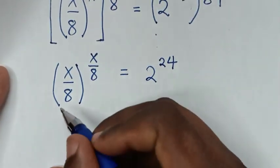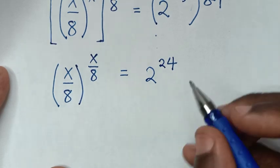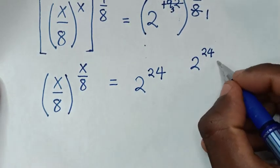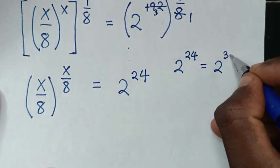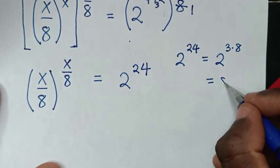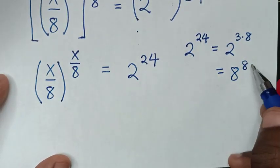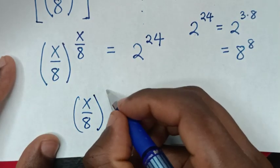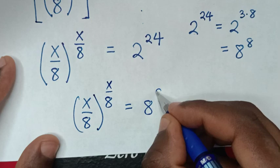From here we have same base, same power. We also make same base with same power. From 2 power of 24, to have same base same power, it will be equal to 2 power of 24. Now 24 is 3 times 8, so it will be equal to 2 power of 3, which is 8, power of 8. So 2 power of 24 is 8 power of 8. Then it will be x over 8, bracket power of x over 8, is equal to 8 power of 8.